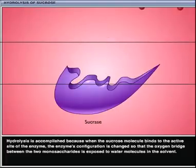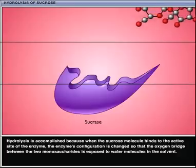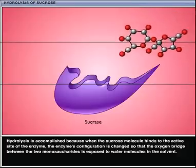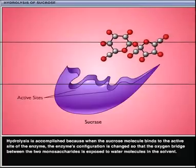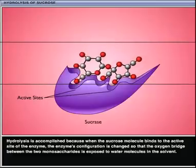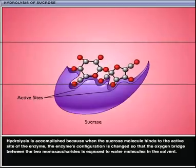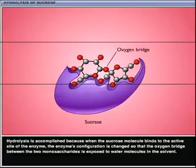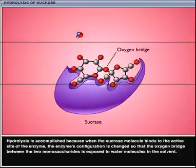Hydrolysis is accomplished because when the sucrose molecule binds to the active site of the enzyme, the enzyme's configuration is changed so that the oxygen bridge between the two monosaccharides is exposed to water molecules in the solvent.